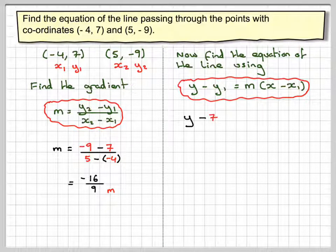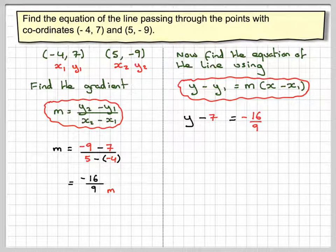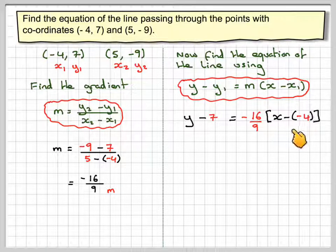so we've got y minus y1 which is 7 is equal to the gradient which is -16 over 9 brackets x minus -4. And again you need to be careful with signs.